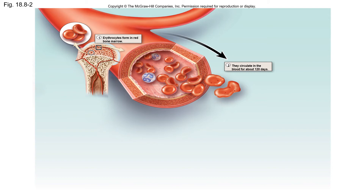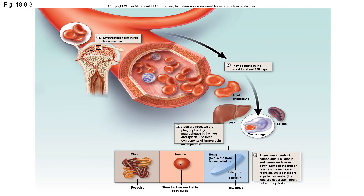Red blood cells have no nucleus and no organelles, so they have no way to maintain themselves. Even so, they circulate for an astounding 120 days before they look worn out. There are a huge number of macrophages in your spleen — and slightly fewer but still plenty in your liver — which feel up your red blood cells as they travel through those organs. If a red blood cell is worn out, they phagocytize it and take it apart for recycling.